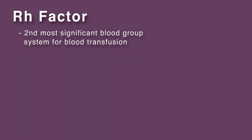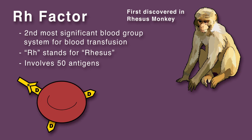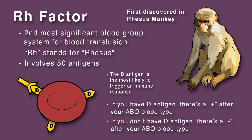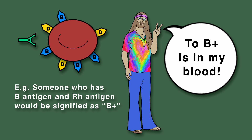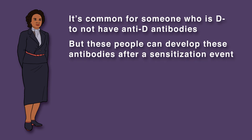The second most significant blood group system for blood transfusion is the RH system. RH stands for rhesus, and it involves 50 antigens. The most significant RH antigen is the D antigen, as it's the most likely to cause the immune system to react. The presence of D antigen is signified by a plus sign after the ABO blood type, while lack of the D antigen is signified by a minus sign. For example, someone who has B antigen and RH antigen would be signified as B positive. It's common for someone who is D negative to not have anti-D antibodies, but these people can develop these antibodies after a sensitization event.